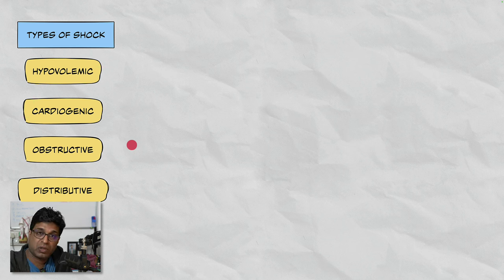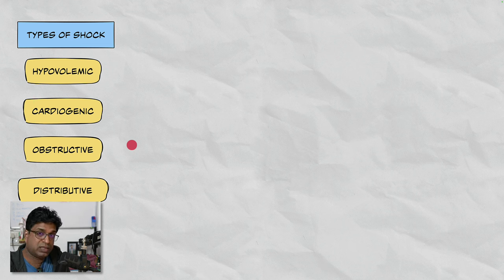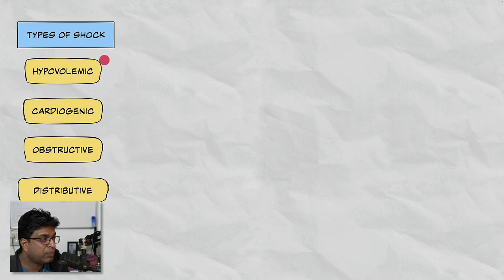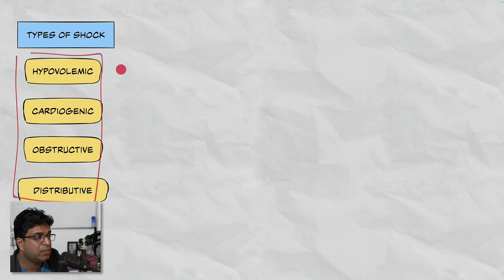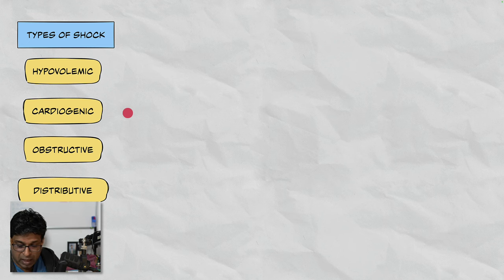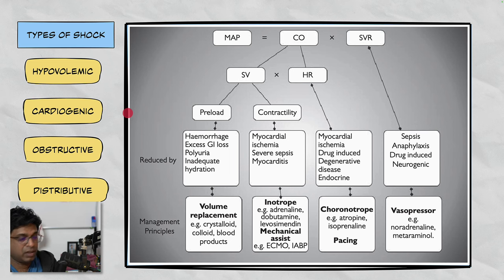Common causes of distributive shock include septic shock, anaphylactic shock, certain toxins causing vasodilatation, neurogenic shock after spinal cord trauma, and burns. The key point is: whenever you encounter a patient with low blood pressure, first try to determine which of these four types of shock the patient is in. It may happen that a patient is in cardiogenic shock and also has sepsis — combinations occur. Once you understand the type of shock, you will be able to apply vasopressors and inotropes in a better way.